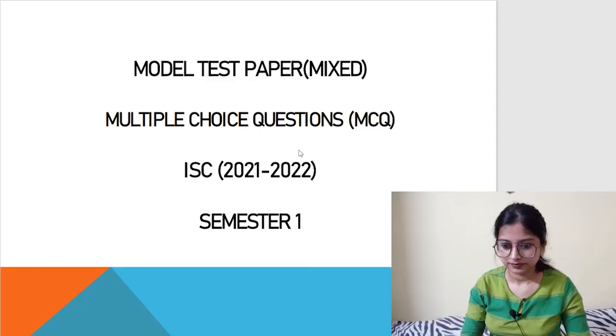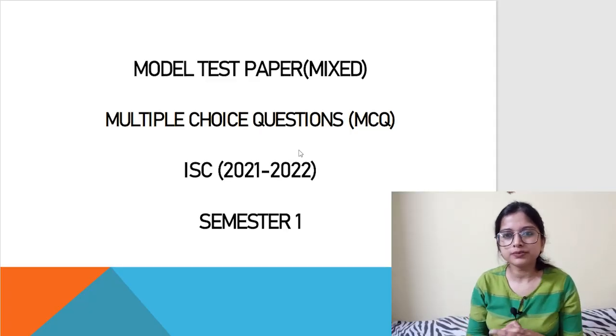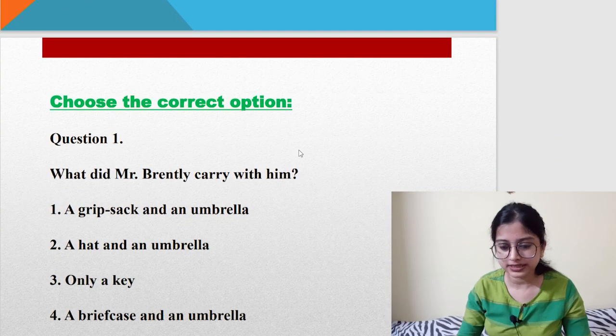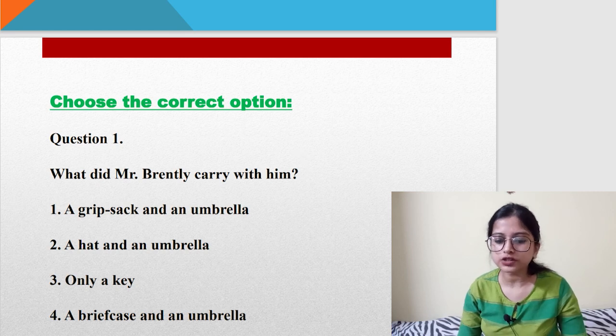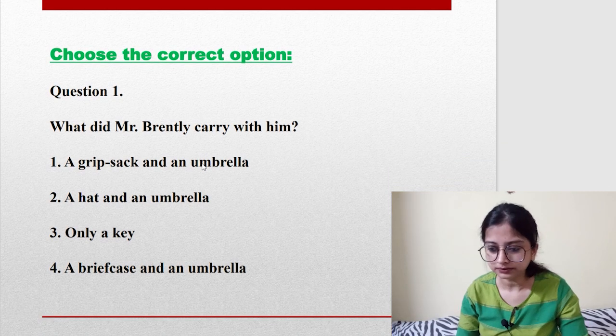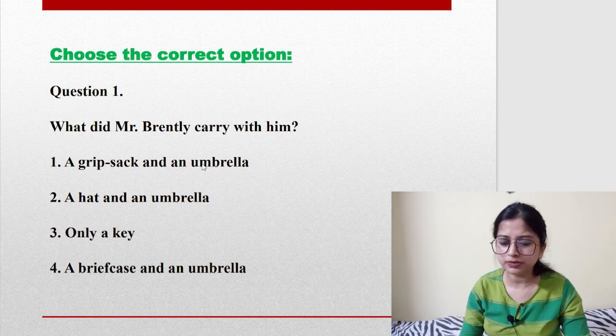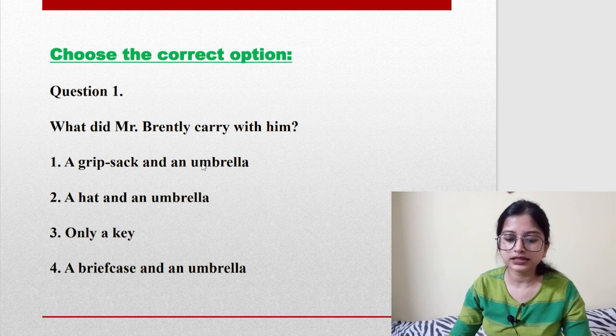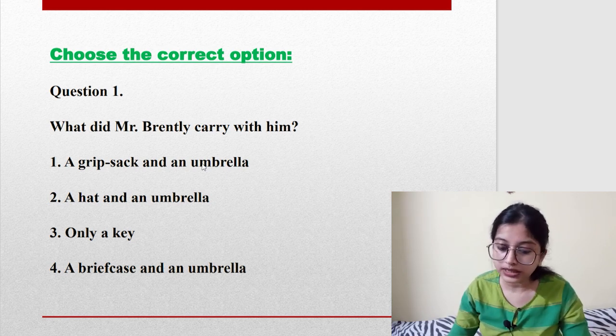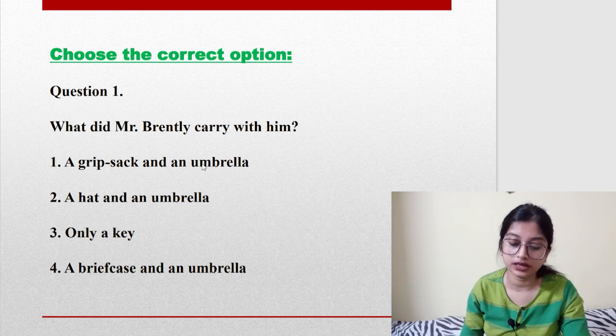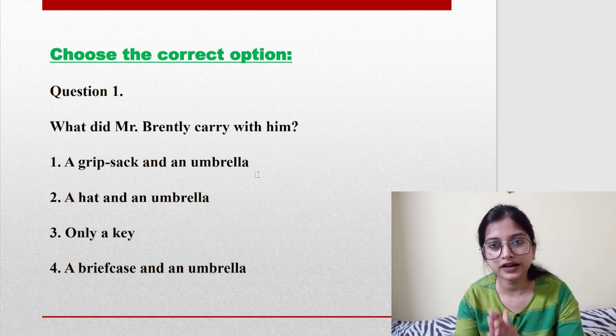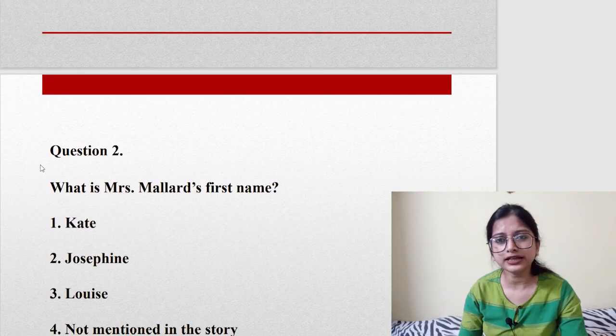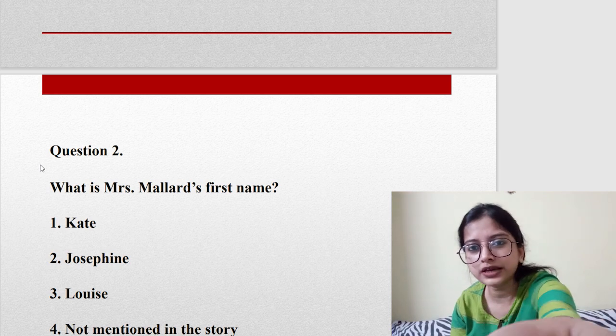Let's begin. Model test paper, mixed exercise. This is the second day of mixed model test paper with multiple choice questions. Question number one: What did Mr. Brentley Mallard carry with him? Is it a grip sack and an umbrella, a hat and an umbrella, only a key, or a briefcase and an umbrella? It is obviously a grip sack and an umbrella, option one.